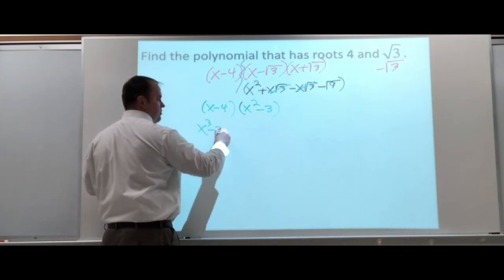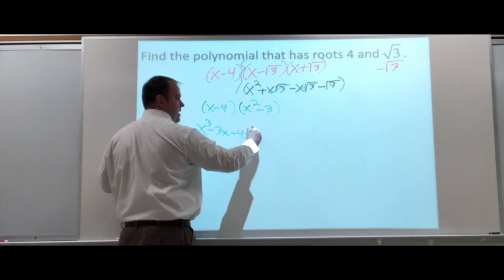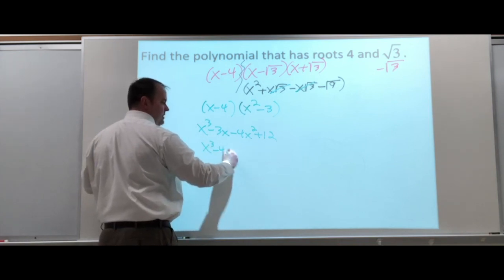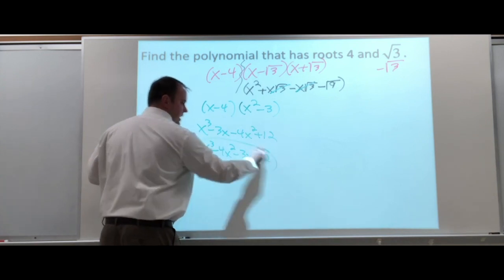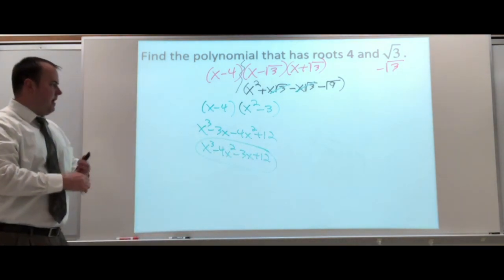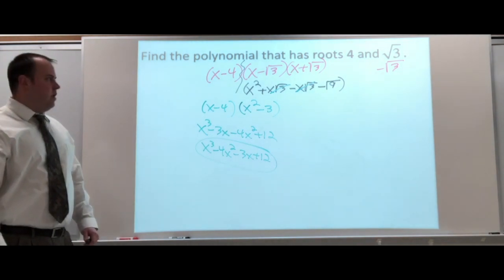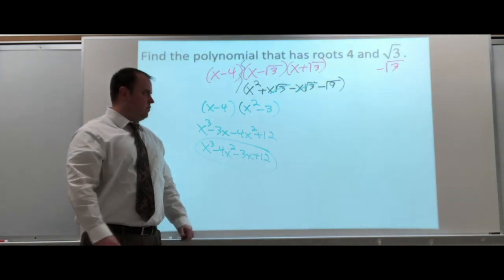X cubed minus 3X minus 4X squared plus 12. X cubed minus 4X squared minus 3X plus 12. I just put it in standard form there to simplify it or to clean it up a little bit. And there's the polynomial that gave us 4 square root of 3 and negative square root of 3.